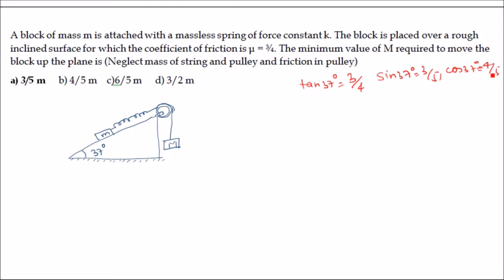How we will approach this problem: first we will write the force equation, then apply conservation of mechanical energy. If you cannot solve the full problem, at least write as much information as possible. To calculate the minimum value of M required to move the block up the plane, we first write the force equation on the block of small mass m.